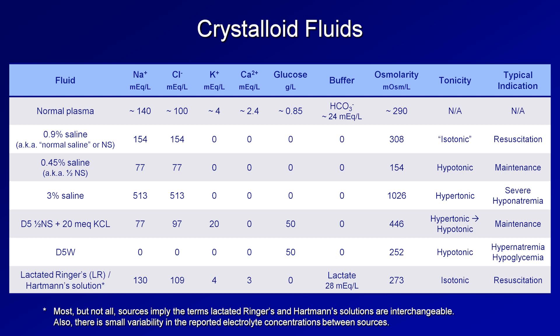We normally think of lactate in the plasma as dangerous — it leads to an elevated anion gap metabolic acidosis and is used as a marker for poor tissue perfusion and shock. So why would we intentionally add it? Lactate gets metabolized in a series of steps to bicarbonate, providing a buffer to help prevent the acid-base disturbances seen with rapid infusion of normal saline. LR was the first of the so-called balanced solutions — a term used to describe any IV fluid that closely approximates the electrolyte concentrations of normal plasma. Some argue that contemporary usage of the term balanced solution should no longer include LR, given its high lactate content and lack of magnesium, but there isn't a consensus on this.